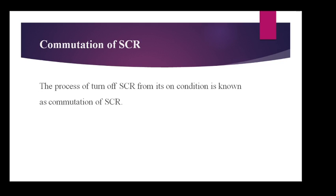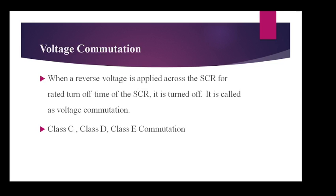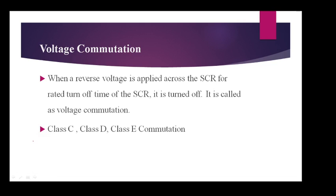The first method is voltage commutation. When a reverse voltage is applied across the SCR for sufficient time, it turns off. This is called voltage commutation, because a reverse voltage is applied across the SCR.